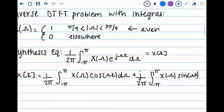Where the cosine is our even part of our DTFT function, and the sine part is our odd part. Since there is no odd part to our DTFT, we know that the right integral goes to 0.